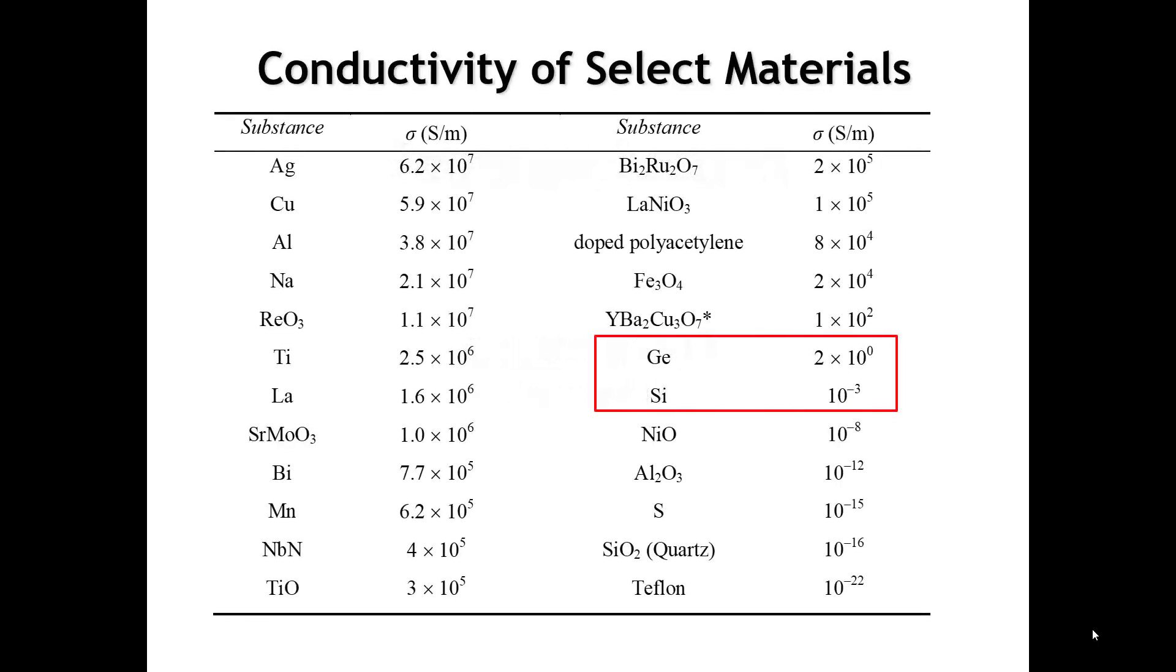Let's return to our table of the conductivity of select materials. On this table we see the elemental semiconductors silicon and germanium, which have rather modest conductivities. They really aren't high enough that you would think they would be as important as they are.